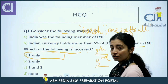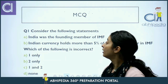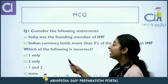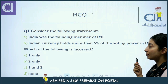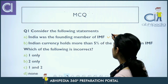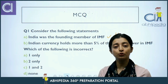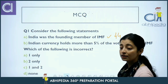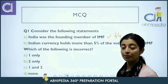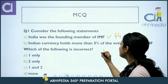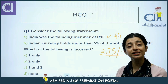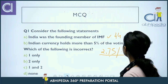Now let's move forward to certain MCQs to see what you have retained. First MCQ — consider the following statements: (1) India was the founding member of IMF. (2) Indian currency holds more than 5% of the voting power in IMF. Statement 1 is correct — we discussed that 44 nations had the Bretton Woods meeting and India was part of it. Statement 2 is incorrect — India's voting power is approximately 2.6%, which is less than 3%. So the answer is A — only statement 1 is correct.